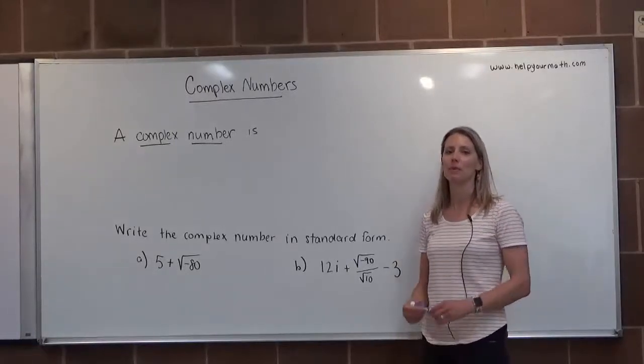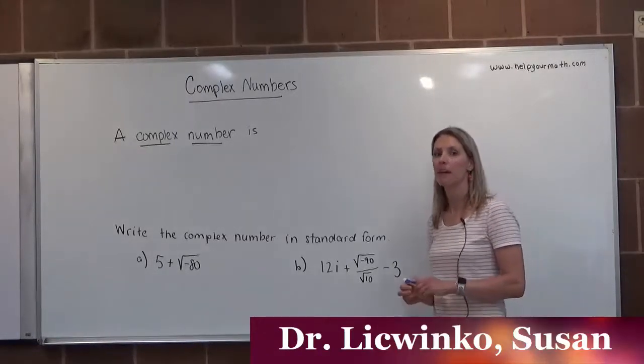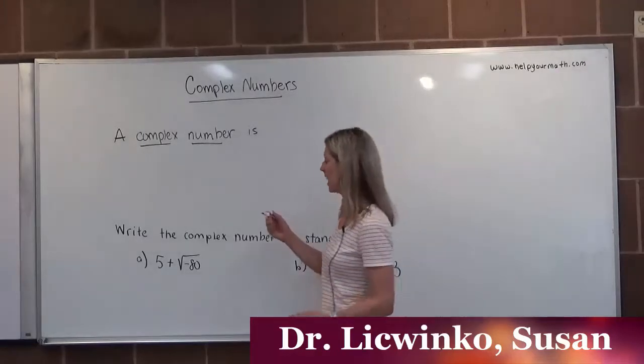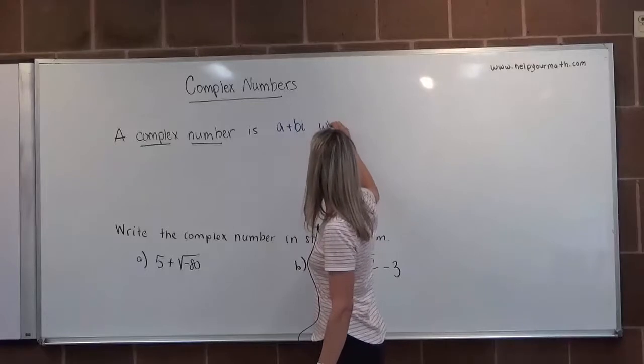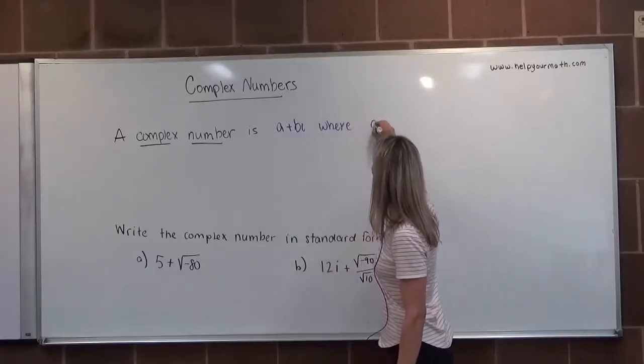This is a brief introduction to complex numbers. A complex number is any number that can be written in the form a plus bi, where a and b are real numbers.